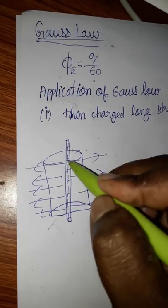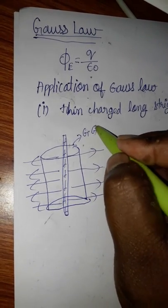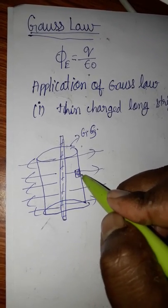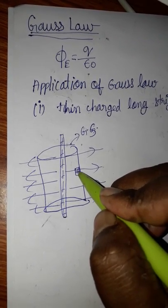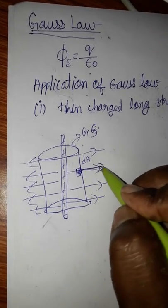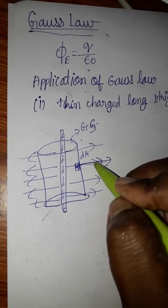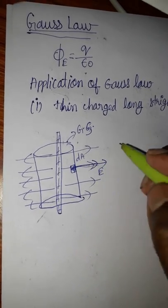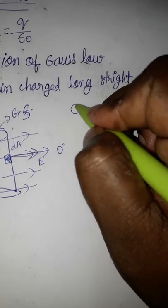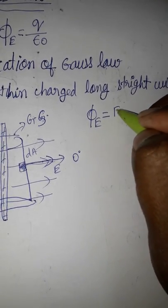I consider a cylindrical Gaussian surface. On this Gaussian surface, I consider a small unit area element dA. The area vector points outward, and the electric field also points in the same direction, so the angle between the area vector and the electric field is zero degrees.